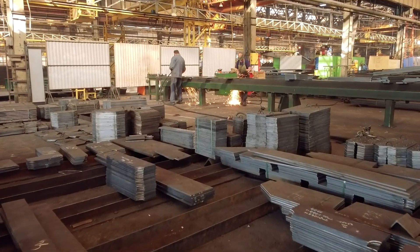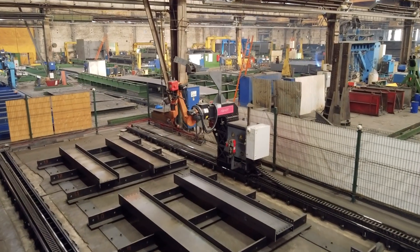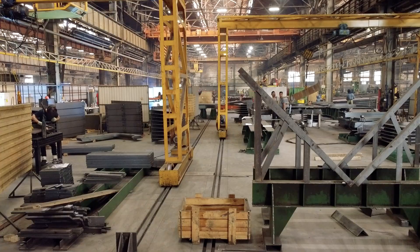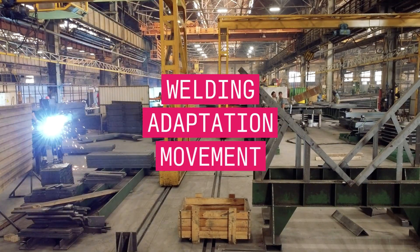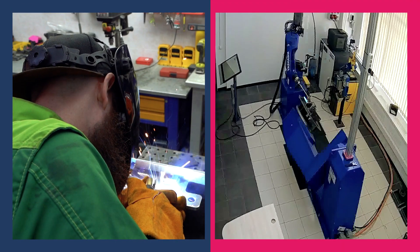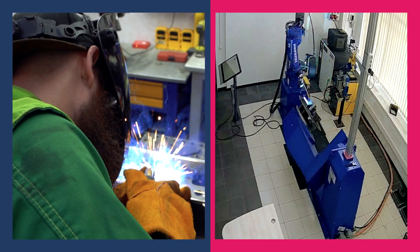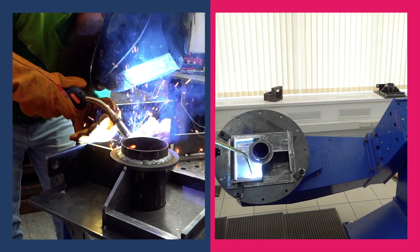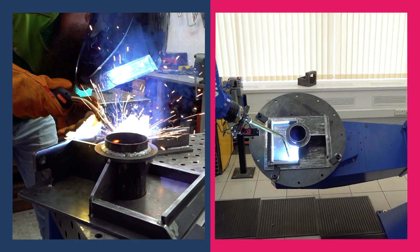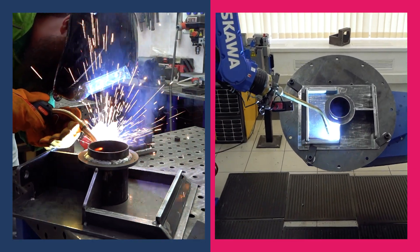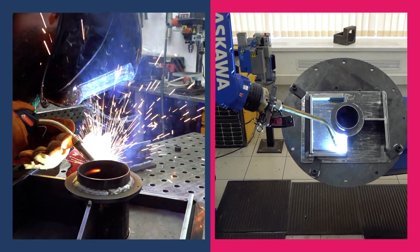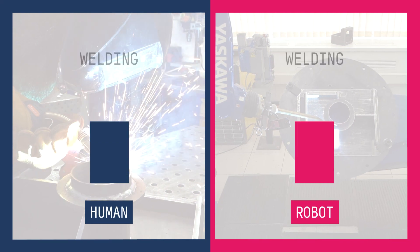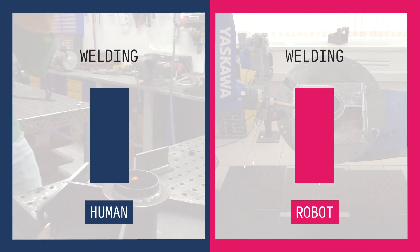Let's discuss this topic too. During the welding process, both the robot and the human perform three actions: welding, adaptation, and movement. Starting with welding — the welding speed is not significantly different between a human and a robot. There's no getting around the physics of the process. Even if the robot is faster, it's not by much. You can achieve a time advantage of a few tenths of a percent, but not three or four times faster.